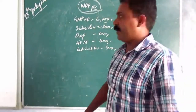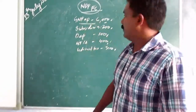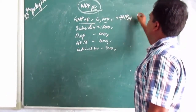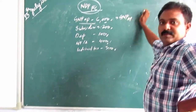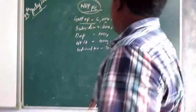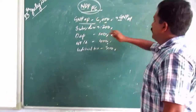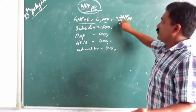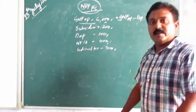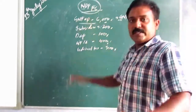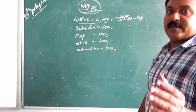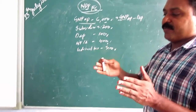Here we are asked to find NAPFC, which is the higher value given. We start from GMPMP. The connection between gross and net: to make gross into net, you reduce depreciation. By reducing depreciation we can convert gross into net.